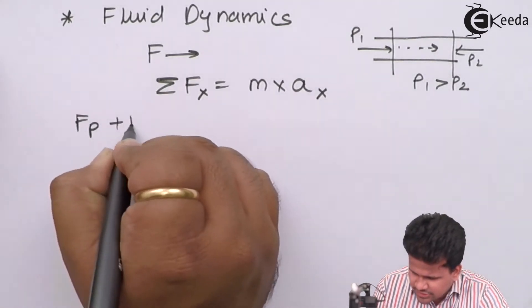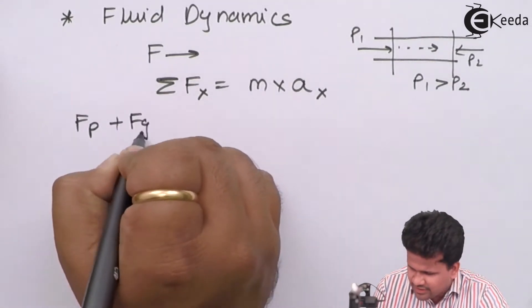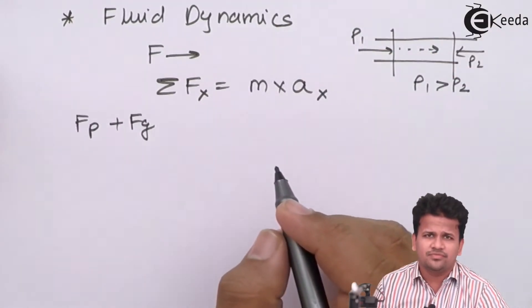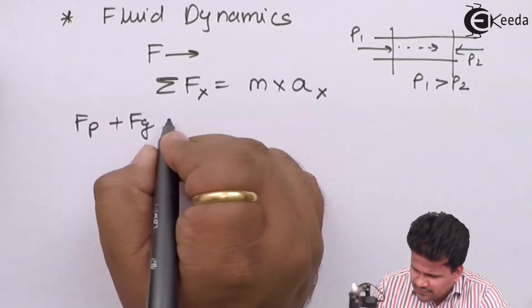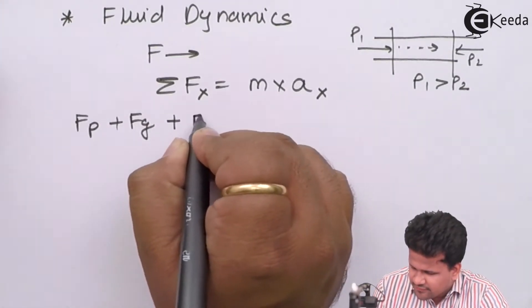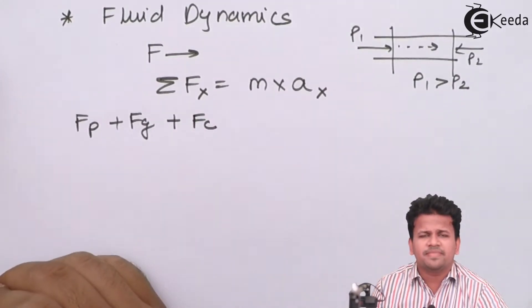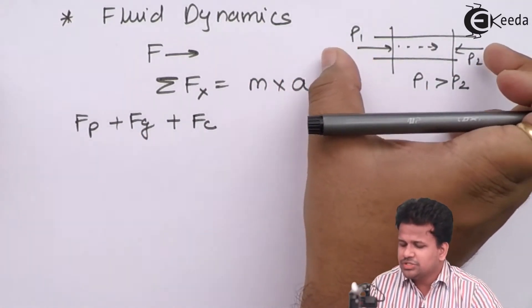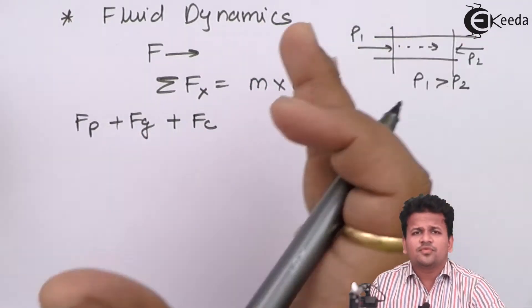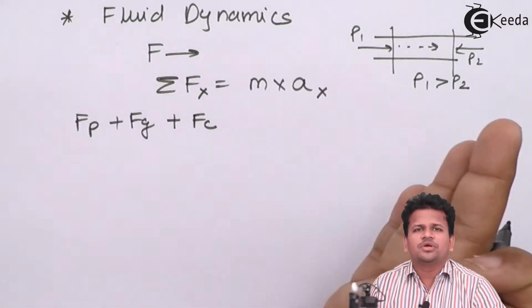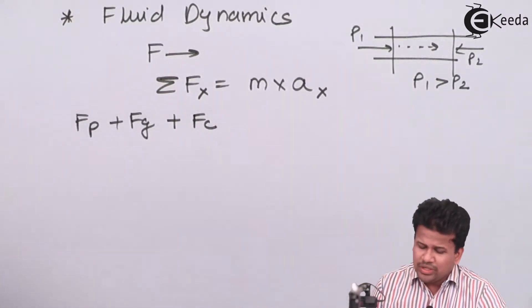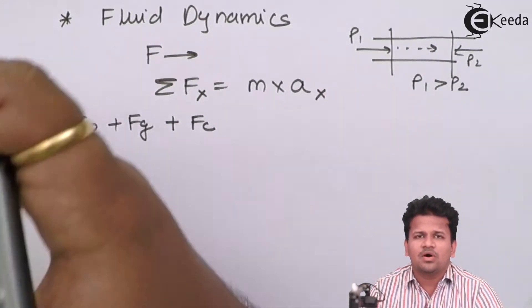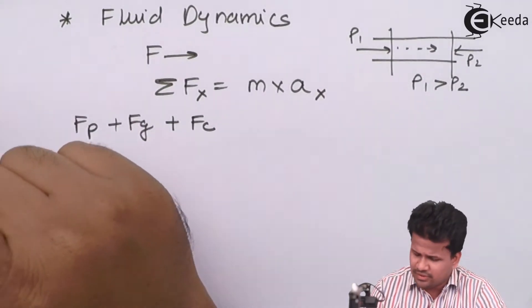Next is the force due to gravity, which is always going to act downwards due to the weight of the fluid. The next force is the force due to compressibility. During application of forces on the fluids, the fluid might compress or expand, and during compression or expansion, there is some amount of force which acts upon the fluid.